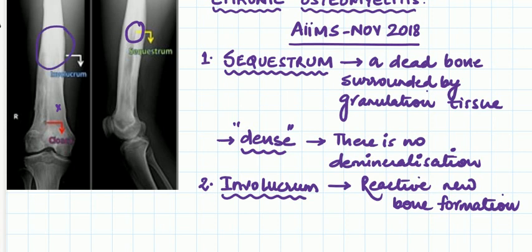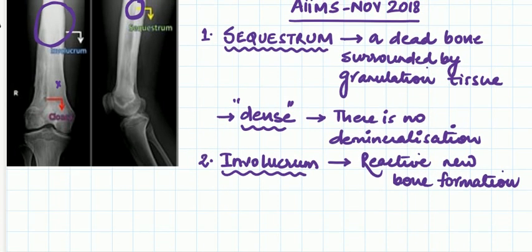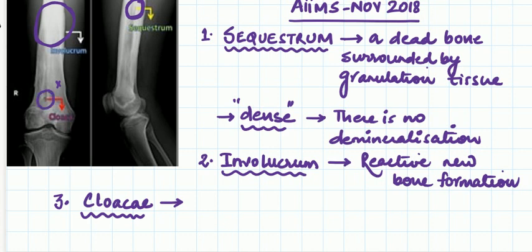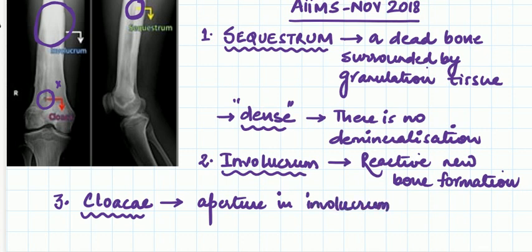The sequestrum is surrounded by granulation tissue with new bone formation all around. The infective granulation tissue keeps pressurizing the involucrum — the new bone. Wherever the involucrum ruptures, it opens up to give space for the granulation tissue to move out. This aperture is what you call a cloaca. Cloaca are apertures in the involucrum created by the pressure of granulation tissue against the reactive new bone formation.